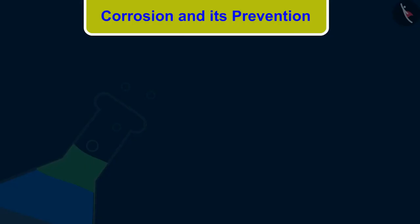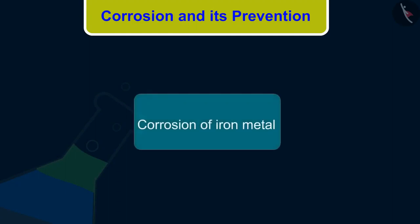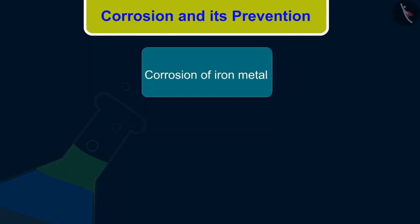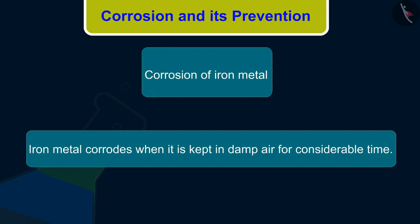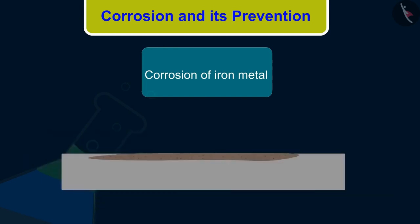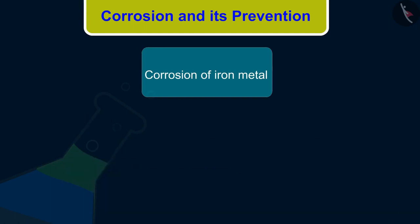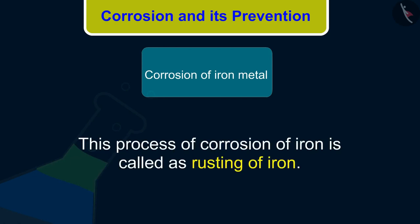Let's discuss the corrosion of iron metal. Iron metal corrodes when it is kept in damp air for a considerable time. It gets covered with a reddish-brown flaky substance which is called rust. This process of corrosion of iron is called rusting of iron.